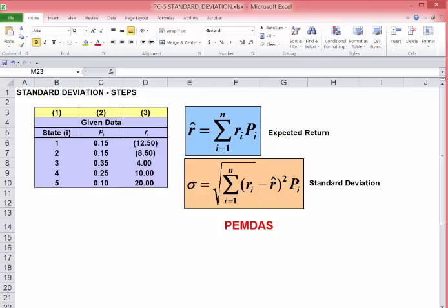An important thing to remember, if you're asked to solve for standard deviation, you're probably going to be presented with data that looks like this. Probability, states of the economy, and expected return in each state. The first thing you have to do is solve for expected return since you need that to solve for variance and standard deviation.